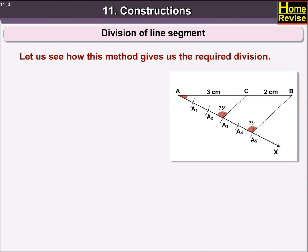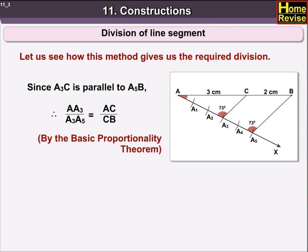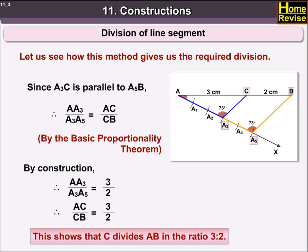Since A3C is parallel to A5B, therefore AA3 upon A3A5 is equal to AC upon CB by the Basic Proportionality Theorem. By construction, AA3 upon A3A5 is equal to 3 upon 2. Therefore, AC upon CB is equal to 3 upon 2. This shows that C divides AB in the ratio 3 is to 2.